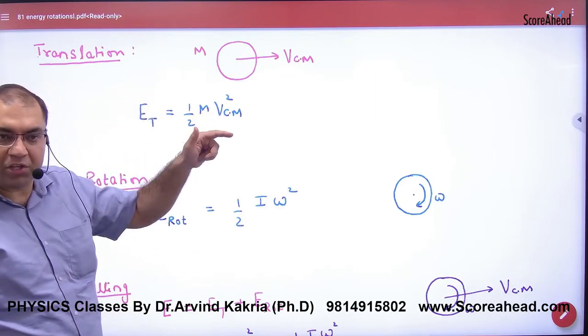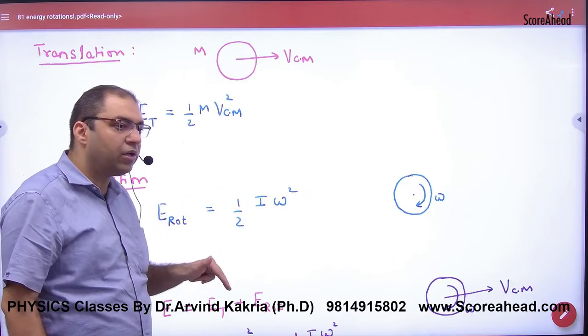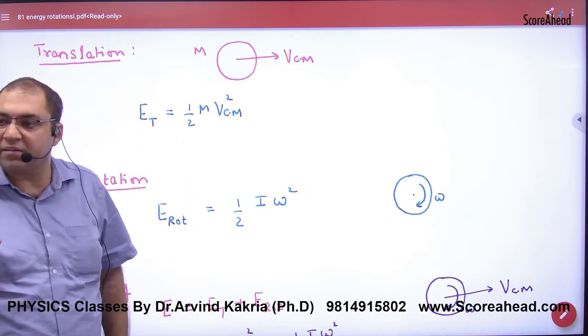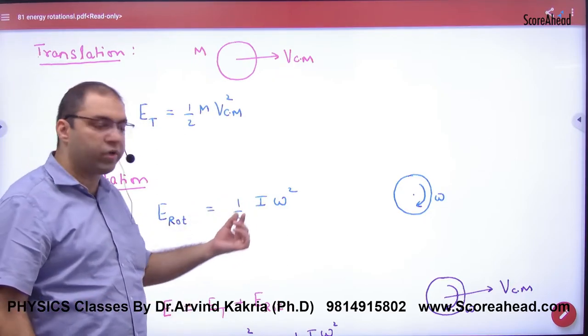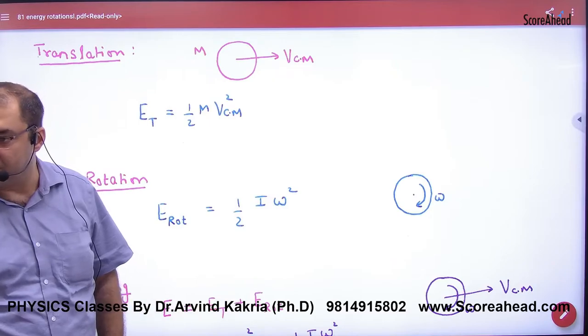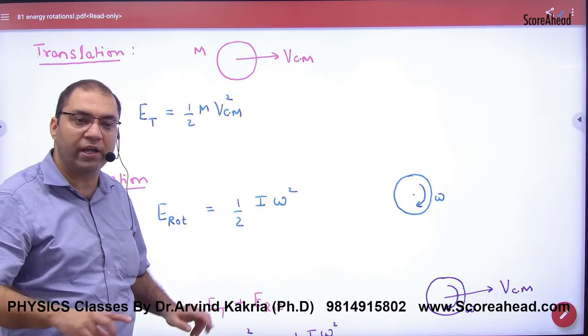So what was the work in linear translation motion of mass, that work will be done by moment of inertia in rotation motion. Because in translation motion you have to take mass, but in rotation motion, mass and shape both have to be taken, and what does the combination of both give? Moment of inertia. What was the work in translation by V, that work will be done by omega. So if someone is standing up and rotating, then what will be the energy in pure rotation? Half I omega square.